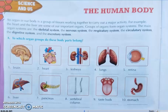Seventh, pancreas — the digestive system. Eighth, vertebral column — the skeletal system. Ninth, taste buds — the nervous system. Tenth, stomach — the digestive system.